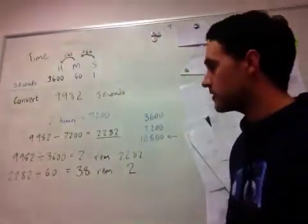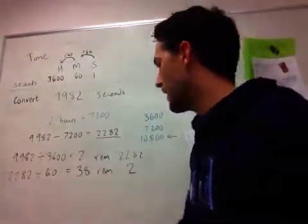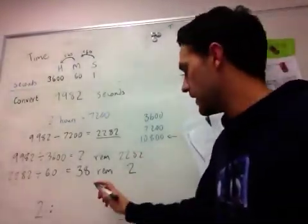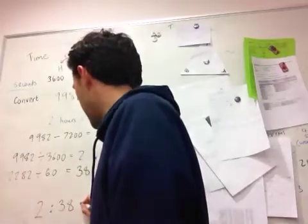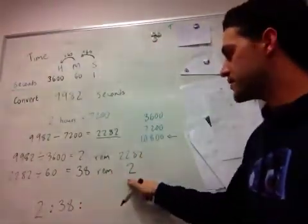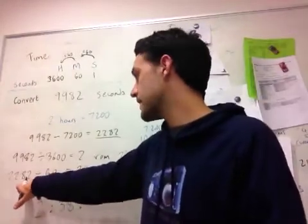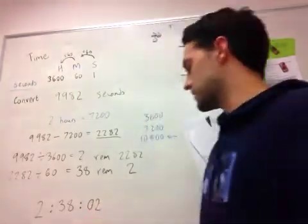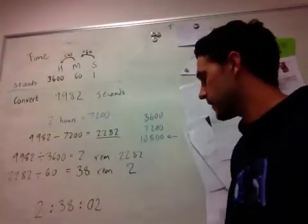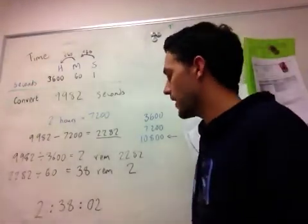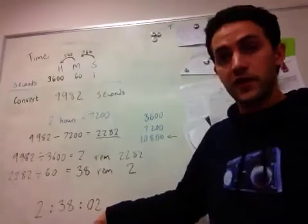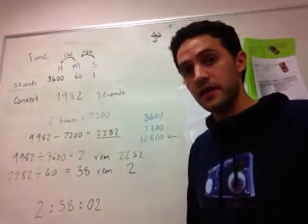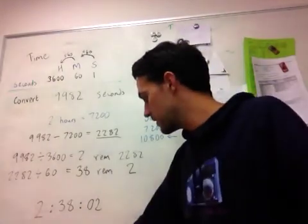So I divided 9,982, and I got that I have two hours. And then I took the rest of those seconds and divided them into minutes, and I found that I had 38 minutes. And then finally, I had two seconds left over, because this was just two seconds more than 38 times 60. And if I wanted to check my answer, I could then do the reverse process that I did before, and multiply this by 3,600, multiply this by 60, and add these in order to come up with the final answer.